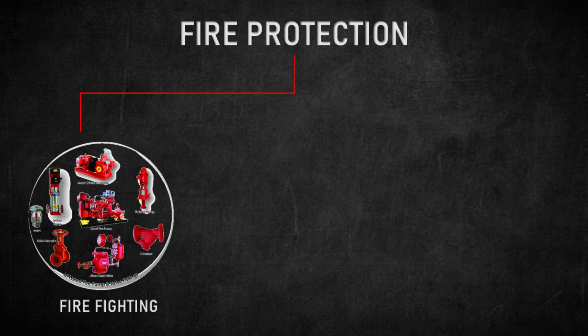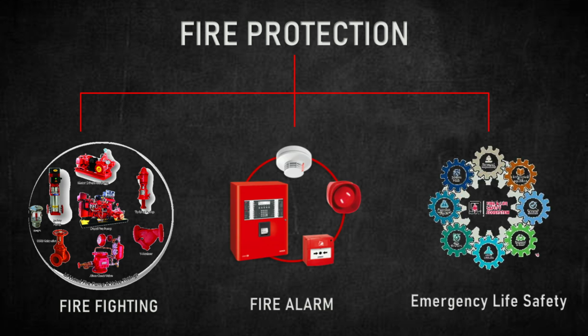Fire protection systems are mainly categorized into three: firefighting system, fire alarm system, and emergency life safety.